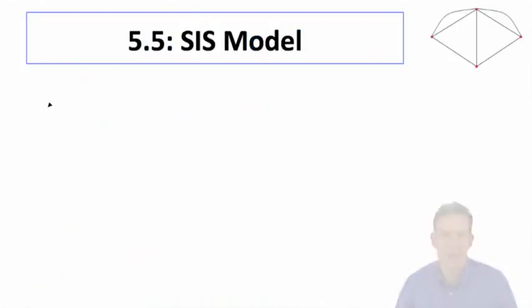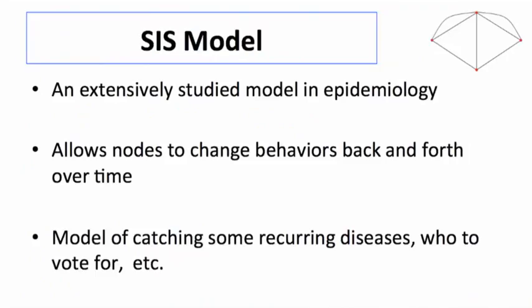So what's the structure of this model? It comes out of a model that's been used and studied a lot in epidemiology — there were a set of models by Bailey in the 1970s that sort of defined a lot of these things. So what does S stand for? Susceptible. And then I stands for infected, and then susceptible again.